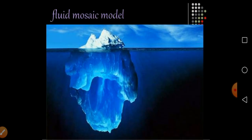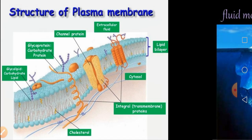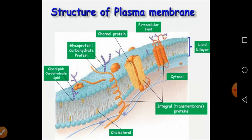The plasma membrane is flexible in nature, and that flexibility is because of the lipids present in the membrane. On your screen you can see a large iceberg floating on sea water — proteins are embedded in the lipid bilayer in this fashion, like an iceberg floating on sea water.